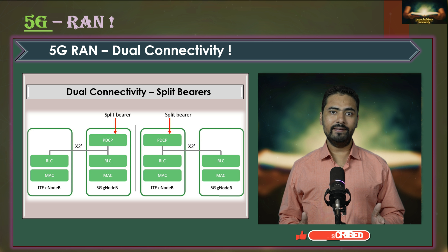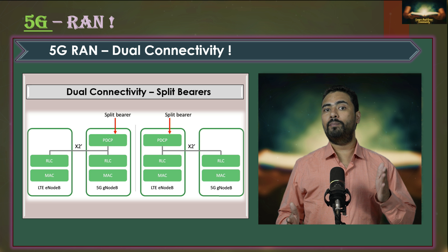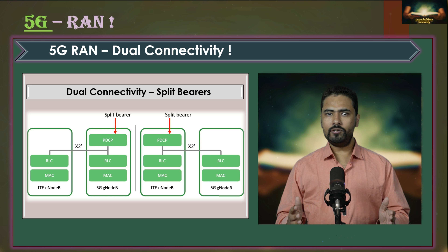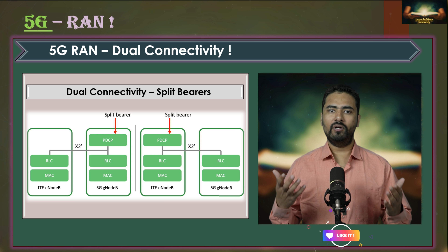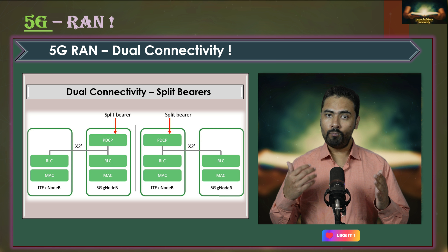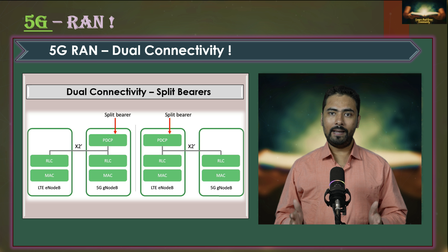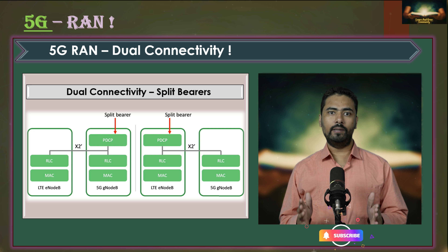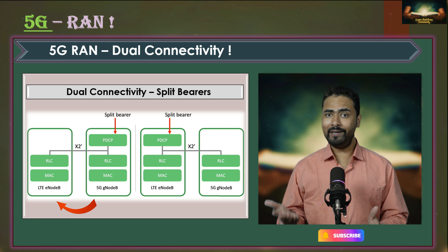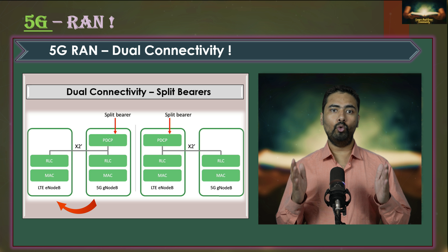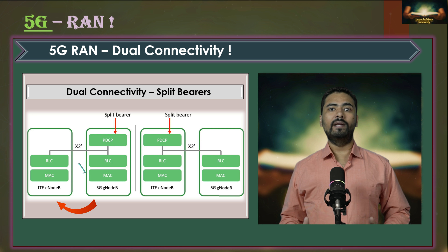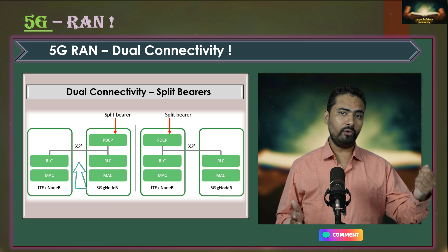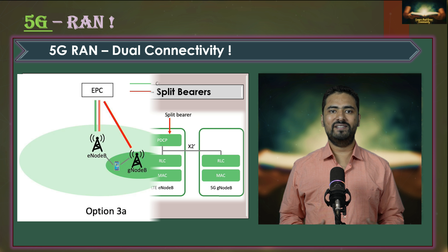Split bearers can be terminated at either the primary node or the secondary node, depending on the network configuration. It is important to note that for split bearers it is generally preferred and recommended that the primary node and the secondary node are co-located, because there would be a significant amount of data transfer that needs to be routed over the X2 interface.